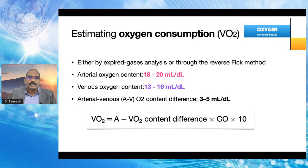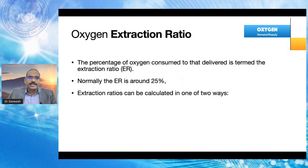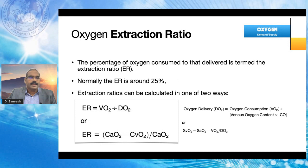We can estimate oxygen consumption, or VO2, either by expired gas analysis or through the reverse Fick method. Arterial oxygen content is 18–20 mL/dL, and on the venous side it is around 13–16 mL/dL, so the difference is approximately 3–5 mL/dL. The oxygen extraction ratio represents the percentage of oxygen consumed relative to that delivered, with a normal value of approximately 25%. Oxygen delivery DO2 can be estimated by the formula using SpO2 as an important player.